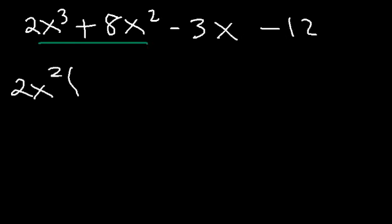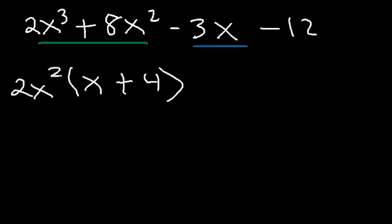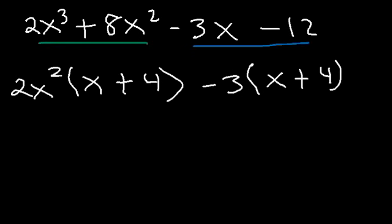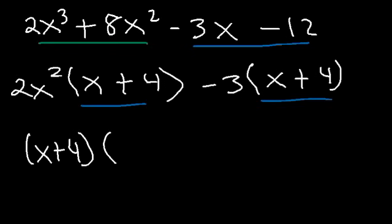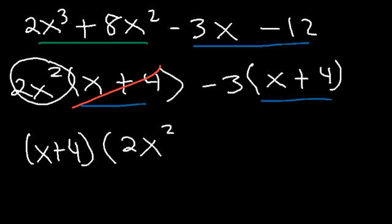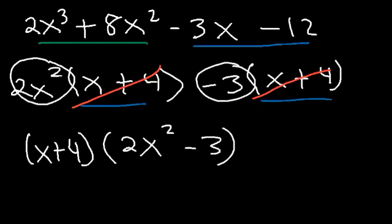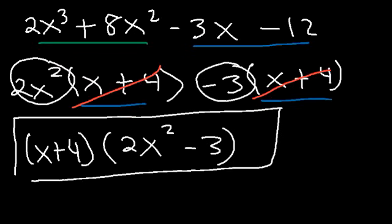Let's take out the GCF in the first two terms: 2x squared. 2x cubed divided by 2x squared is x, and 8x squared divided by 2x squared is 4. In the last two terms we take out negative 3. Negative 3x divided by negative 3 is x, and negative 12 divided by negative 3 is positive 4. We have the common factor x plus 4, so factoring it out gives us 2x squared minus 3. The answer is x plus 4 times 2x squared minus 3.